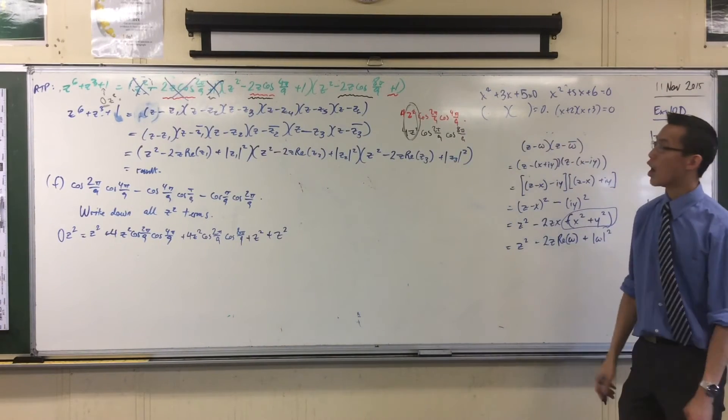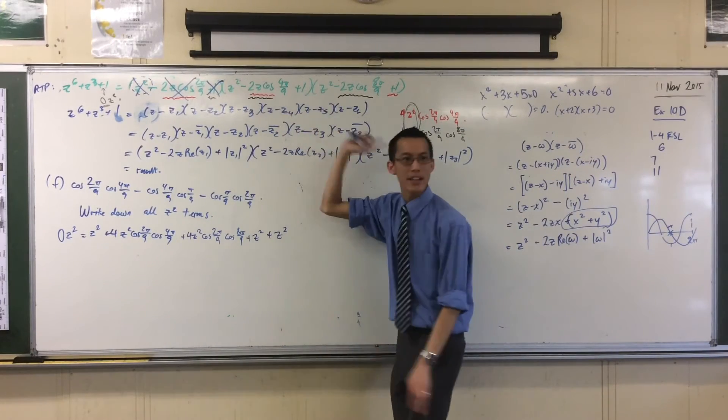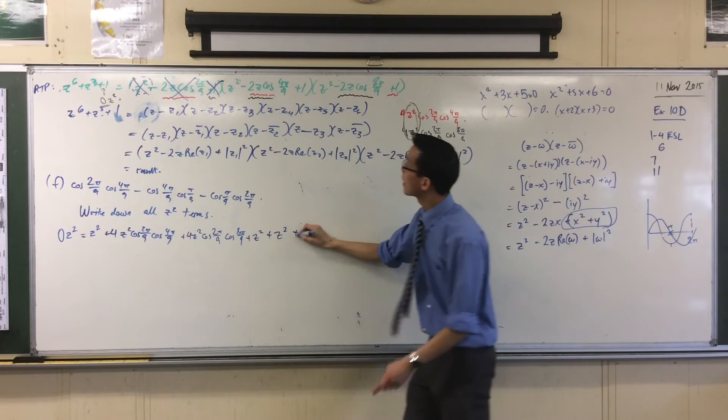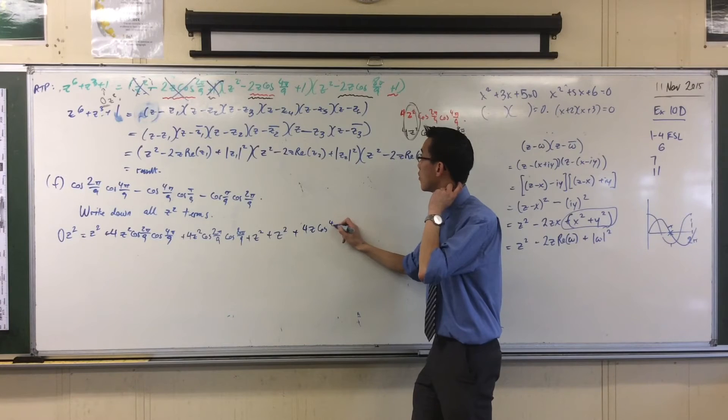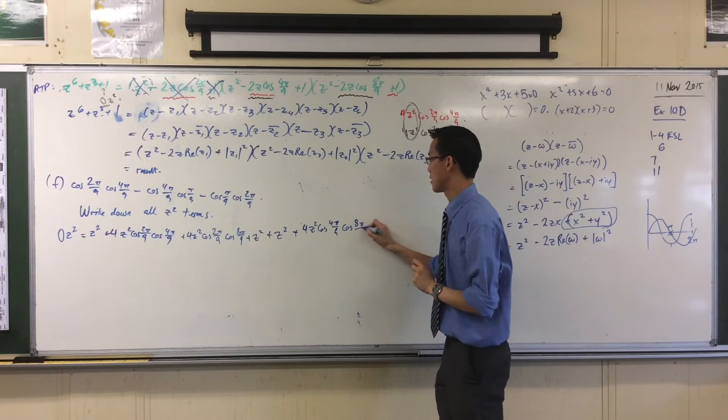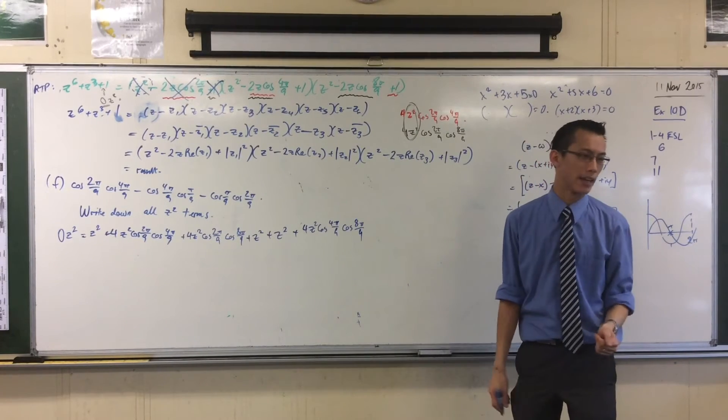You can still use that one more time. Oh, yes, you're right. No, I have. I have. I've used up my z squareds over there. But I haven't used up these two guys. So I get, what am I getting? 4z squared cos 4 pi of 9, cos 8 pi of 9. That's the second and third angles. There's always a double negative happening.